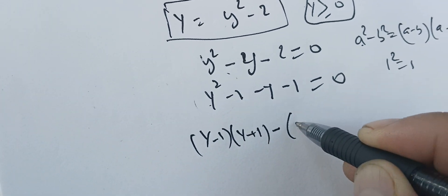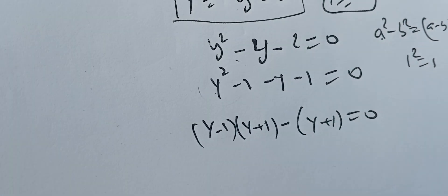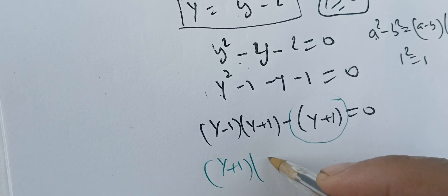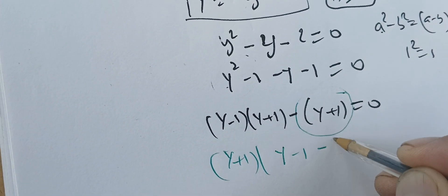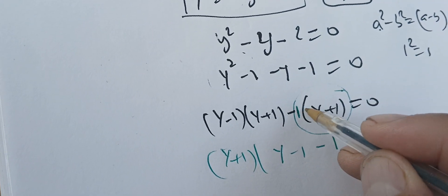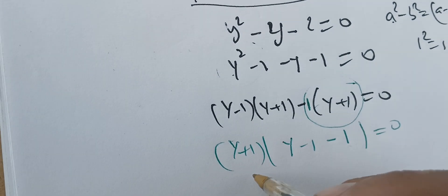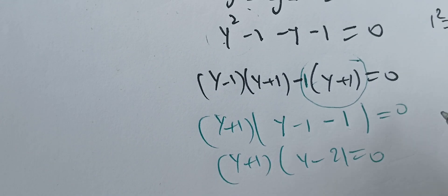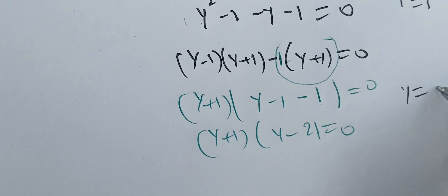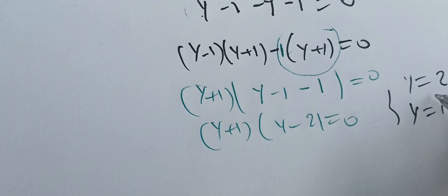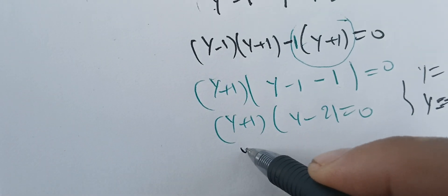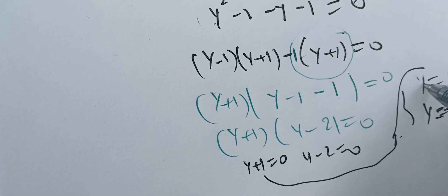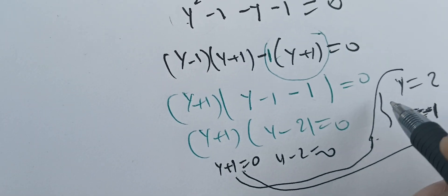Factoring, we get (Y minus 1)(Y plus 1) minus (Y plus 1) equals 0. We can see that (Y plus 1) is a common factor. Factoring it out gives (Y plus 1)(Y minus 2) equals 0. This means either Y plus 1 equals 0, giving Y equals minus 1, or Y minus 2 equals 0, giving Y equals 2.